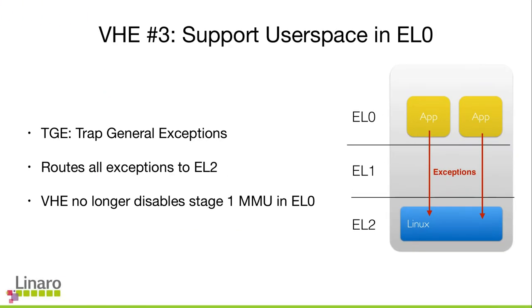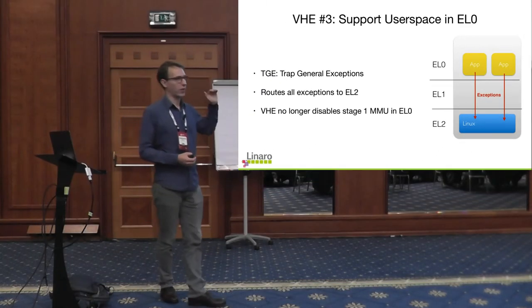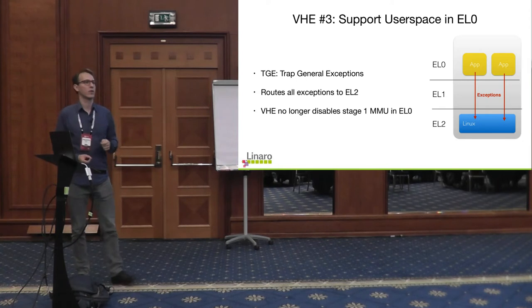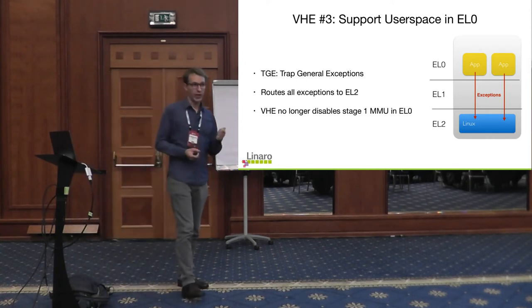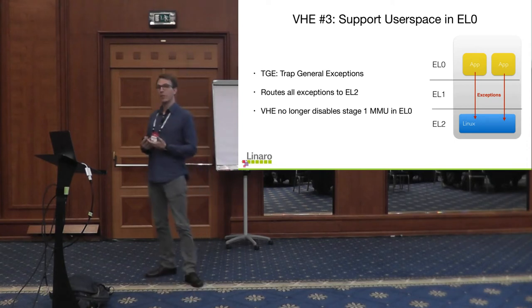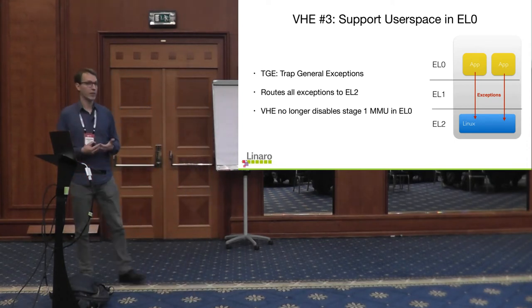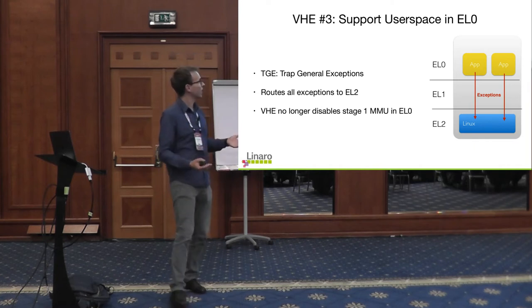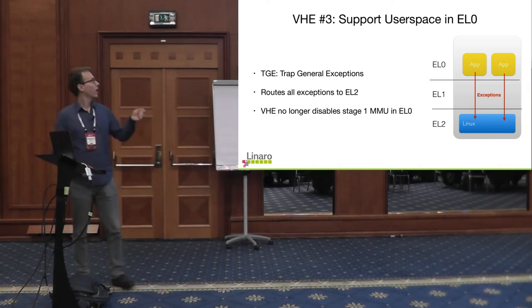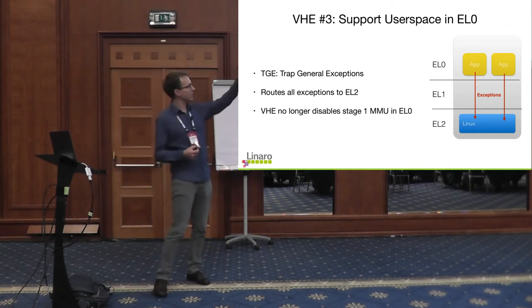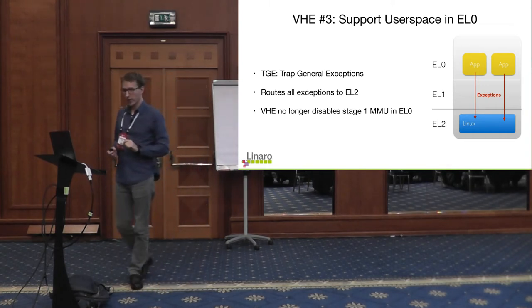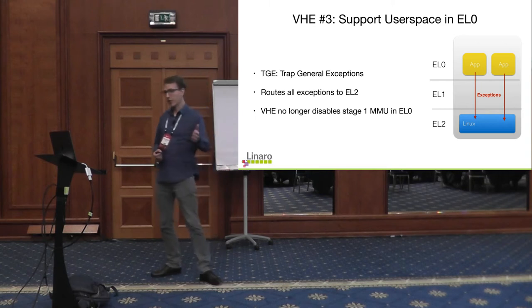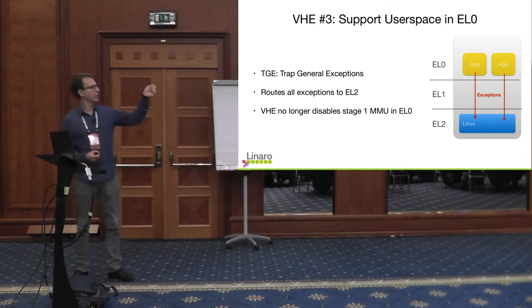Third, you get support for running user space in EL0 interacting with a kernel directly running in EL2. There was a prior feature called TGE (trap general exceptions) designed to run bare metal applications on a type 1 hypervisor, but when set it would disable the MMU in user space. With VHE, that no longer happens — you can run code in EL0 with virtual memory and trap to the kernel running in EL2.